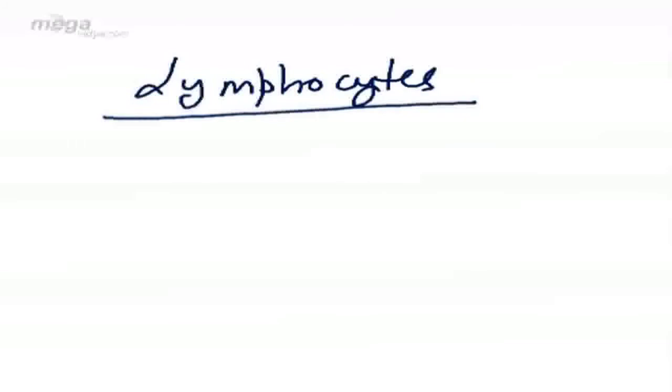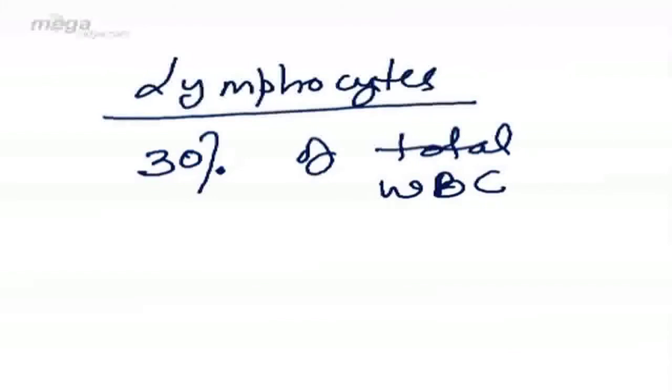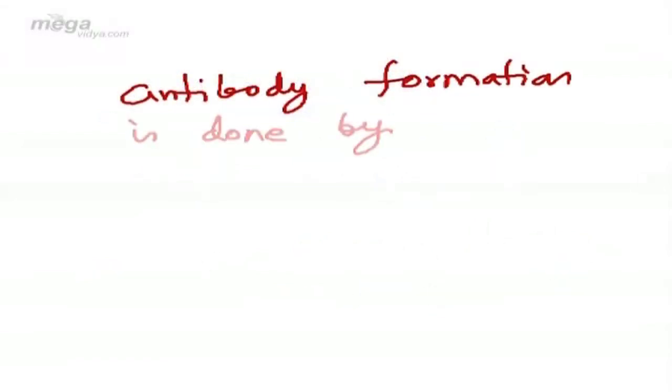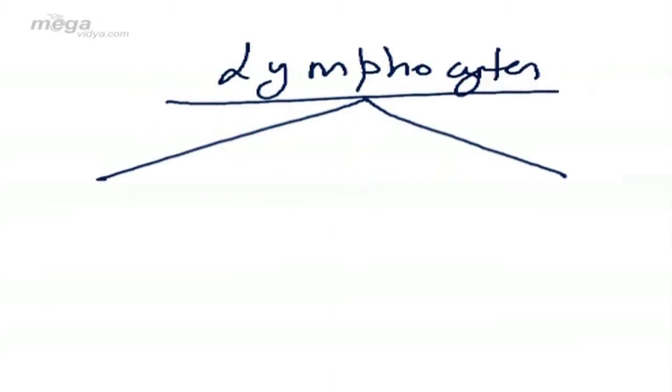And the last of the WBCs but not the least are lymphocytes. They constitute about 30% of total WBCs. They contain a single large nucleus. Antibody formation is done by lymphocytes. Lymphocytes are further of two types: B lymphocytes and T lymphocytes.